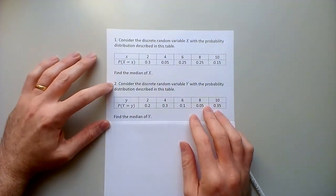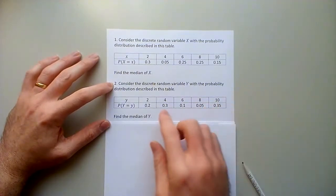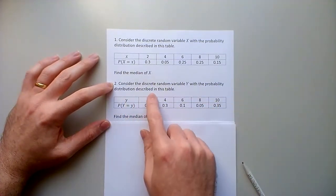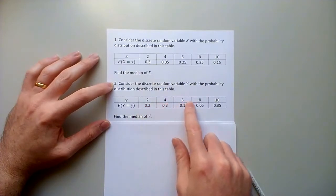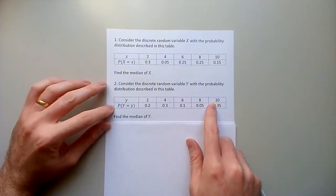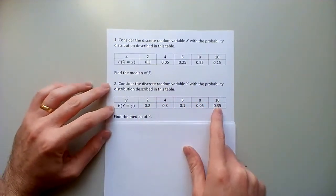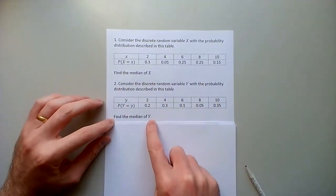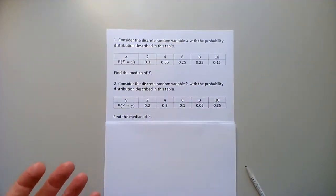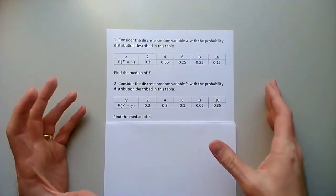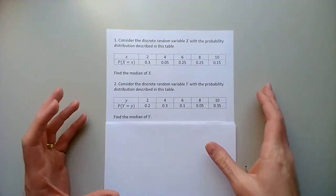The second one says: consider the discrete random variable Y with the probability distribution described in this table, and it has values 2, 4, 6, 8, 10 as well, but the probabilities are different. Find the median of Y. Since the probabilities are arranged differently, the medians are probably going to work out to be different.